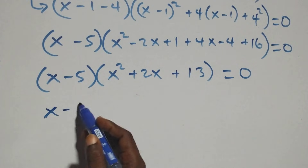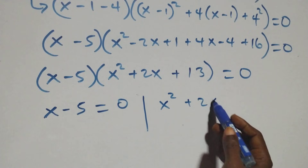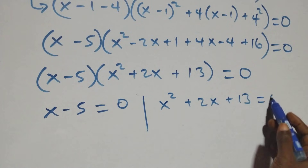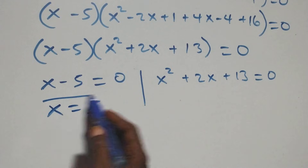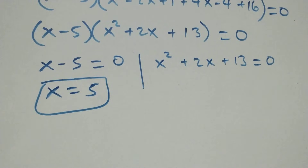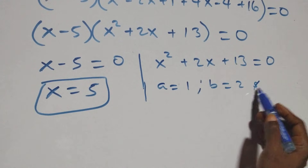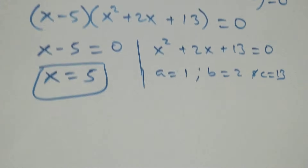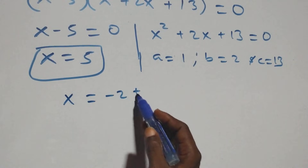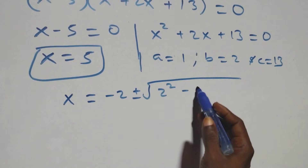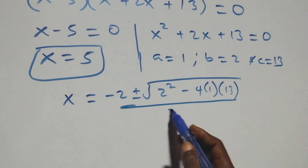We have two possible cases: x minus 5 equals 0, giving x equals 5, which is also a real solution. Or x squared plus 2x plus 13 equals 0. For the quadratic: a equals 1, b equals 2, c equals 13. Applying the quadratic formula: x equals minus 2 plus or minus square root of (2 squared minus 4 times 1 times 13), all over 2 times 1.